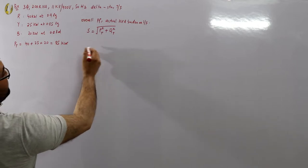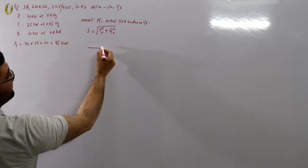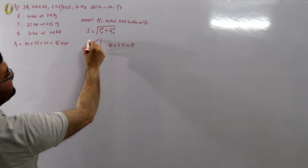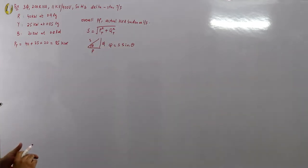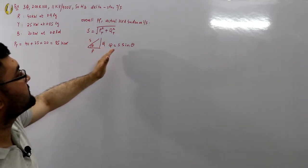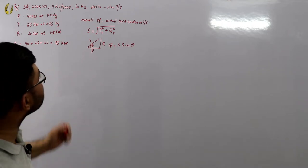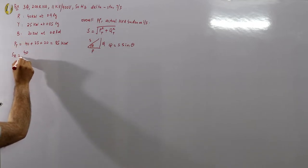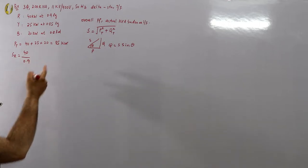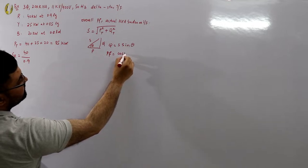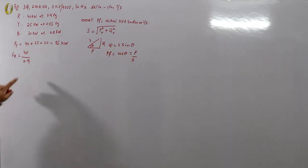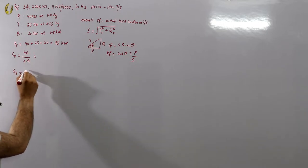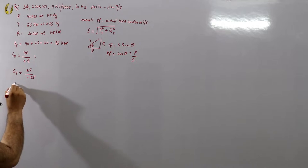For Q, from the power triangle: Q = S·sinθ. You need individual apparent powers. Since power factor = P/S, we get S = P/PF. So S_R = 40/0.9, S_Y = 25/0.85, and S_B = 20/0.8.